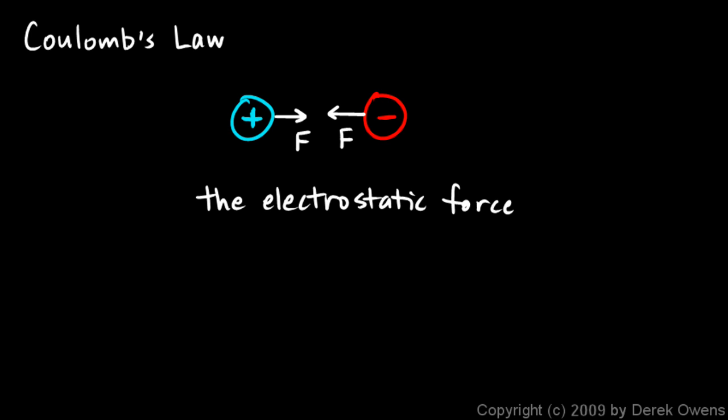Now we're going to talk about Coulomb's Law, which is an equation that describes the electrostatic force. If you have two charged objects, say a positively charged object and a negatively charged object, they're going to attract each other because opposite charges attract. So this force F will be exerted on each charge, and if they were like charges they would repel. But the point is they exert a force on each other, and that force is called the electrostatic force. That's the name given to the force of attraction or repulsion between two charges.